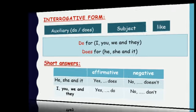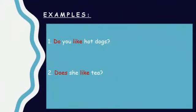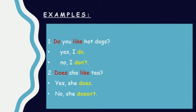Let's see some examples. 'Do you like hot dogs?' We start with 'do' because the subject is 'you' — we can't say 'does you like hot dogs'. The short answers are: yes I do, no I don't. Second example: 'does she like tea?' We use 'does' because the subject is 'she'. The answers are: yes she does, no she doesn't.